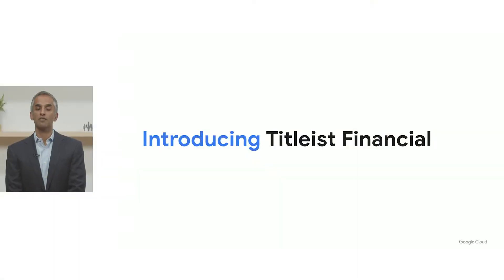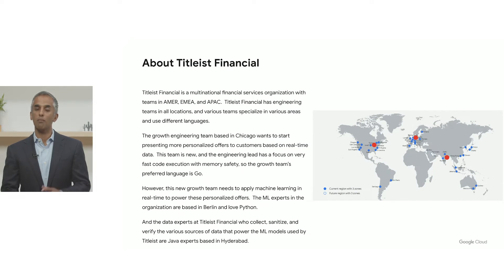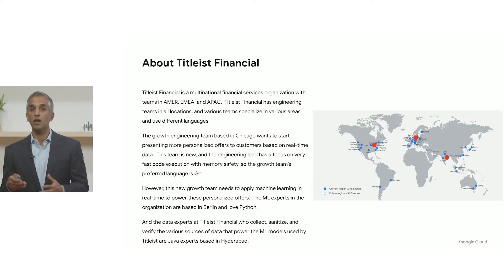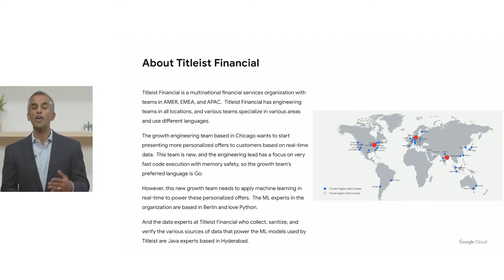Let's talk a little bit about a synthetic representative organization we call Titleist Financial. Titleist Financial is a multinational financial services organization with teams all around the world. They have engineering teams in various locations, and each engineering team has a different specialty and different tools and languages they prefer to work in. The growth engineering team is based in Chicago in the United States, and they want to start presenting more personalized offers to their customer base based on real-time data and machine learning.